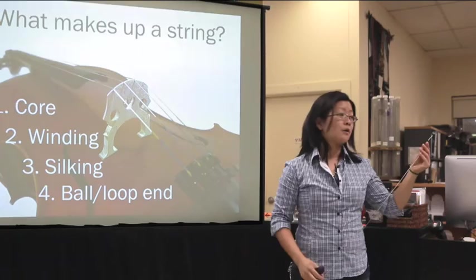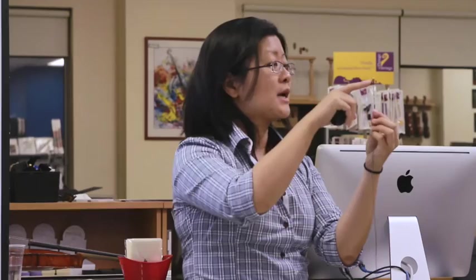With the exception of violin E strings which often have a loop end option as well. The loop end is simply the core material that is made into a loop at the end of the string and does not have a ball going through it.